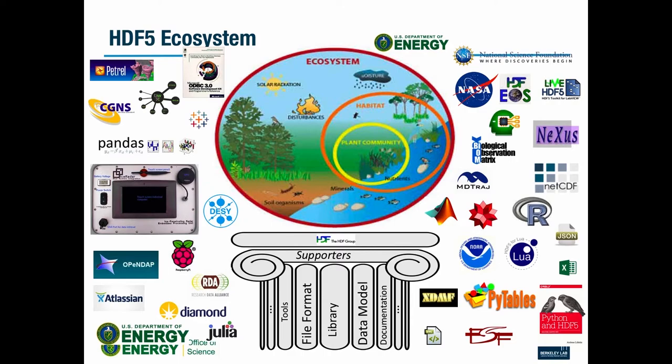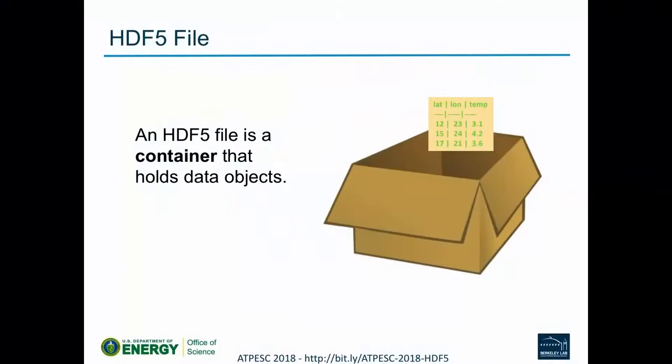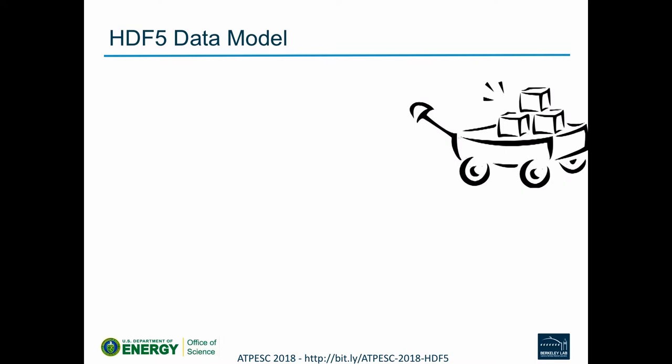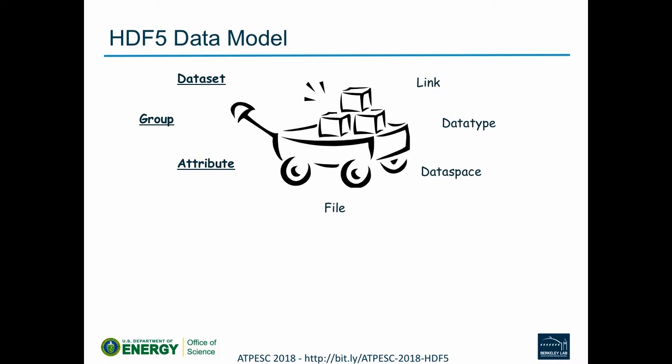Let's start with the HDF5 data model. HDF5 files are containers that hold a variety of data objects, designed to be shared or viewed as a science output package. There are several major interfaces we'll discuss: datasets, groups, and attributes — with underlying concepts of links, data types, and data spaces that support these major classes. We implement this in C but try to be at least somewhat object-oriented.